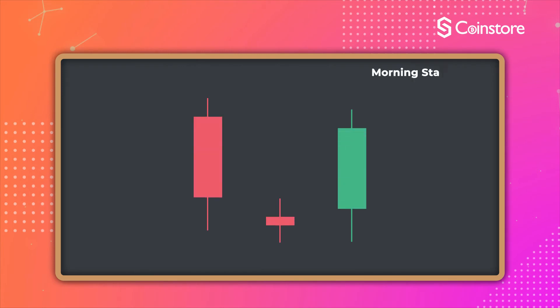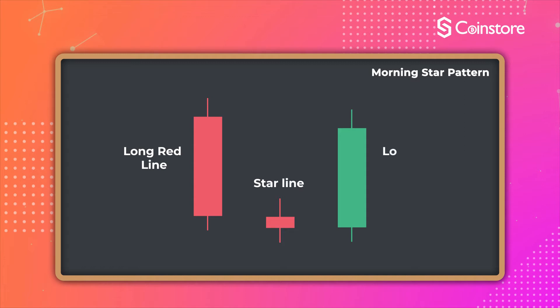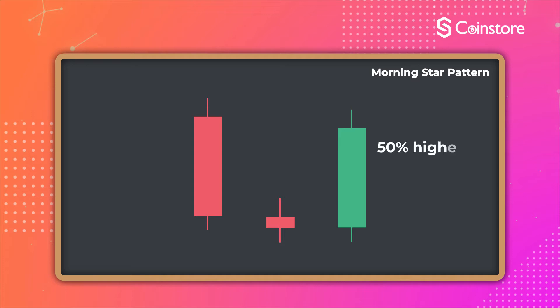As illustrated with the red line in the figure, a standard Morningstar pattern is composed of three candlesticks. It includes a long red line, which is followed by a star line that resembles a cross, and a long green candle. A Morningstar can be identified by observing the long green candle — the closing price of the candle has to be 50% higher than the price of the previous red candle's body. Through the Morningstar pattern, we are able to judge the bullish strength within the market by the position of the closing price of the green candle.